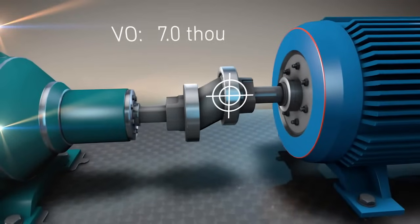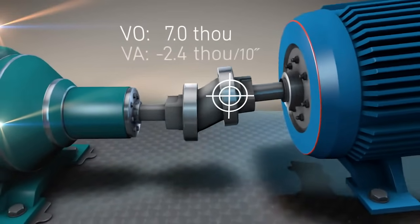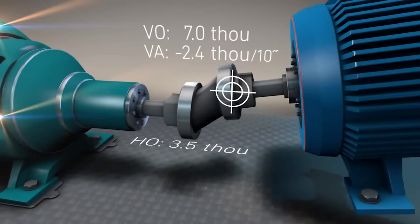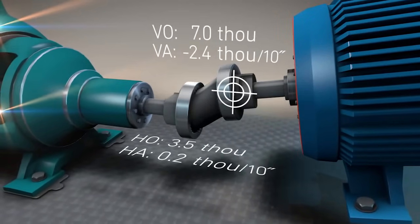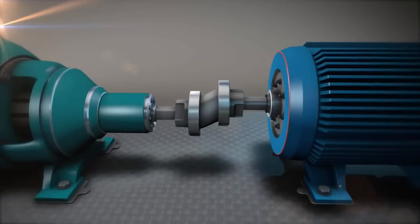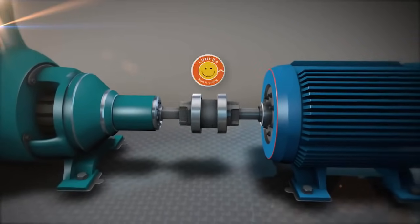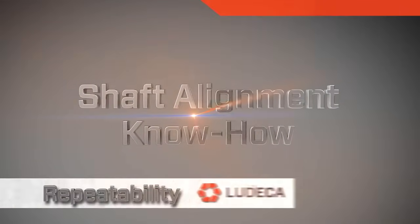Once you know how the machines move with respect to each other, it is very important to input the target values in your laser shaft alignment system if it features this capability. It will then calculate where machines should be positioned when cold and stopped to get correct alignment when they are running.